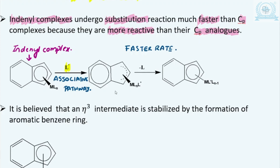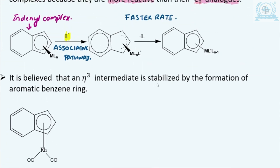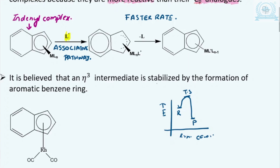Before I explain further, let me point out a simple concept. If you have energy on the y-axis and reaction coordinate on the x-axis, you know that the reactant is energetically high, and it results in the formation of a product through the transition state. The rate of the reaction is dependent on the activation energy, and a catalyst lowers this activation energy, which means the transition state is lowered.